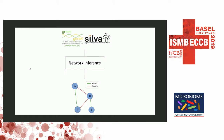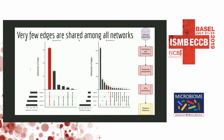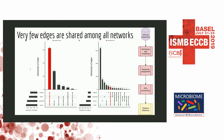Looking at the network inference step — building a network from the taxonomy table — you can see that network inference actually contributes to the most variance. This gives a qualitative picture of how different networks look when using six different network inference methods. Black dots are microbes, green edges represent positive associations, and red edges represent negative associations. Quantitatively, you can see that a large number of nodes intersect across methods, but very few edges intersect, as highlighted in red.